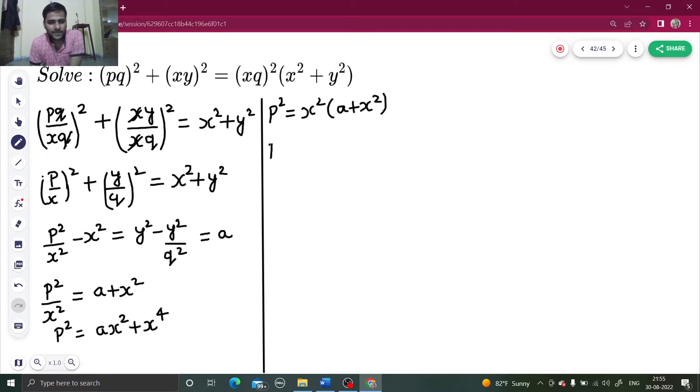So P will be equal to X times the square root of A plus X squared. You got P entirely in terms of X. Now keep this aside.